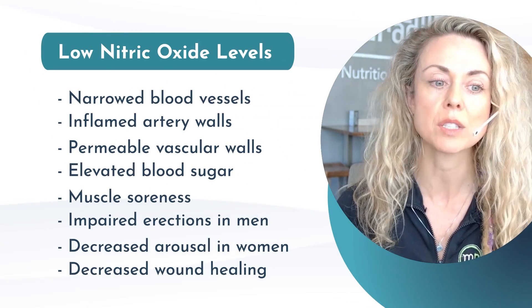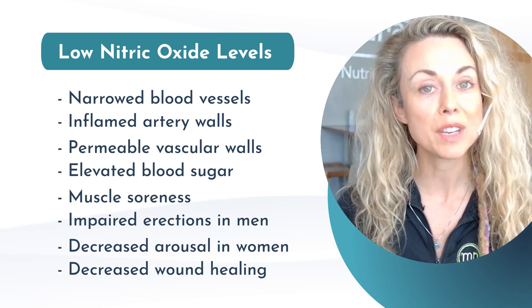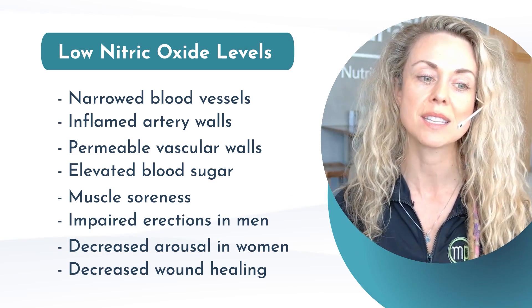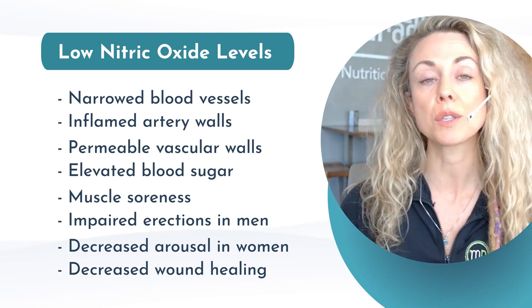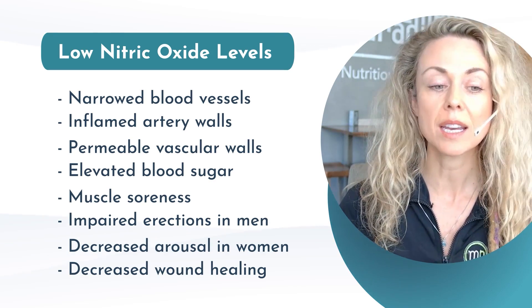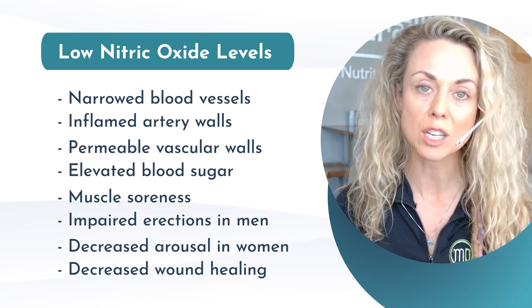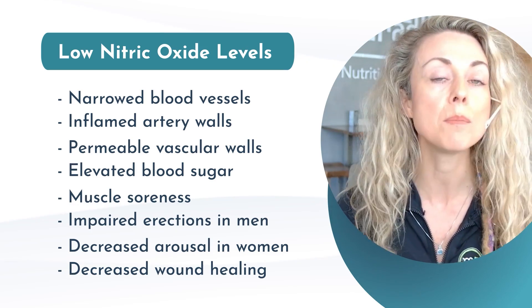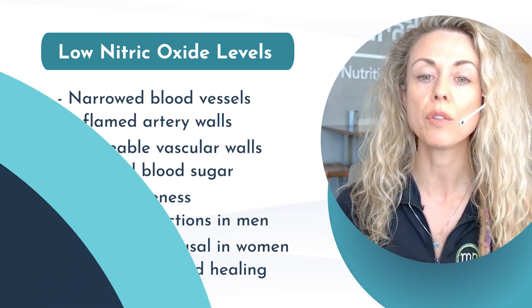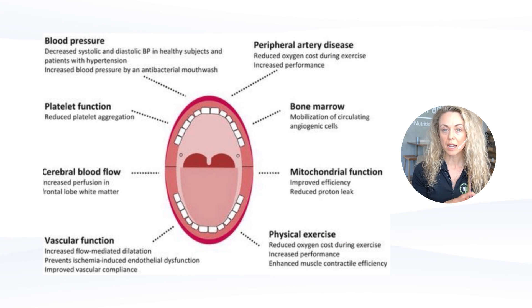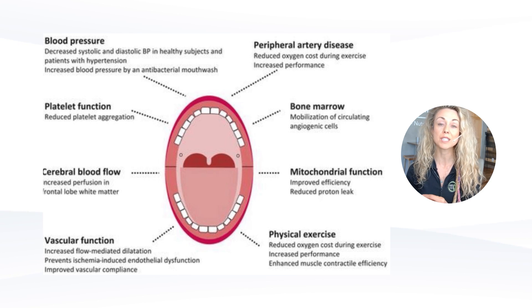Nitric oxide is responsible for vasodilation and regulating blood flow at its peak performance. Deficiency in nitric oxide can contribute to symptoms associated with decreased blood circulation, including narrowed blood vessels, inflamed artery walls, permeable vascular walls, elevated blood sugar, muscular soreness and poor recovery from exercise, impaired erections in men, and decreased arousal in women. Nitric oxide acts as a neurotransmitter in the brain to release oxytocin, the central modulator in sexual behavior. It can also decrease wound healing, and its influence spans blood pressure, platelet aggregation, cerebral blood flow, vascular function, physical exercise, mitochondrial function, bone marrow, and peripheral artery disease.